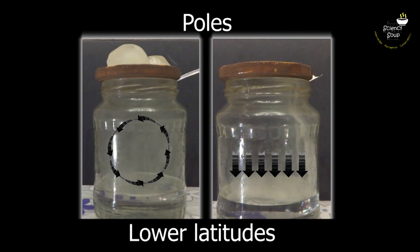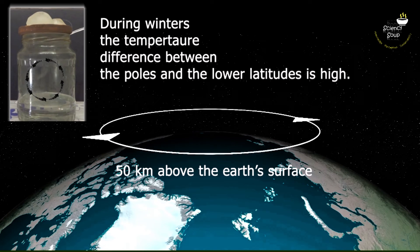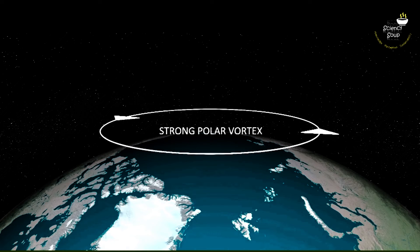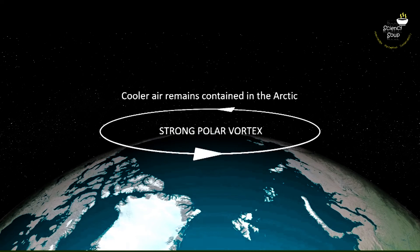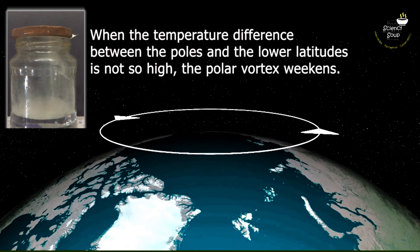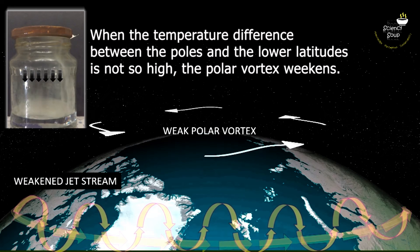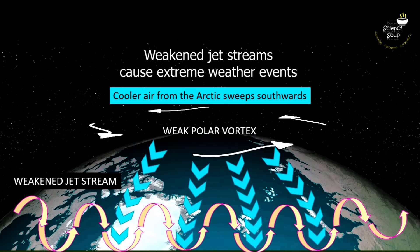When during winters the temperature difference between the poles and the lower latitudes is high, there's a mass of fast-circulating winds about 50 kilometers above the Earth's surface over the poles — we call these winds the polar vortex. When strong, the polar vortex moves at about 250 kilometers per hour, remains contained in the polar region, and remains in harmony with the polar jet streams. However, when the temperature difference between the poles and the mid-latitudes is not so high, the polar vortex weakens and sinks towards the lower latitudes, bringing cooler Arctic air currents to lower latitudes. This further weakens the jet streams, and weakened jet streams bring extreme weather events to the affected region.